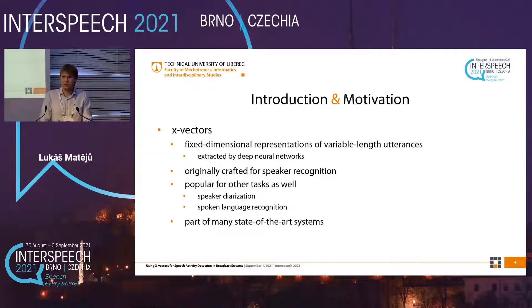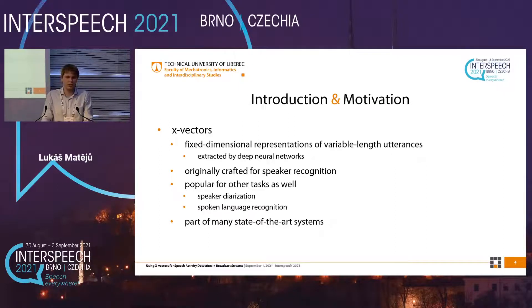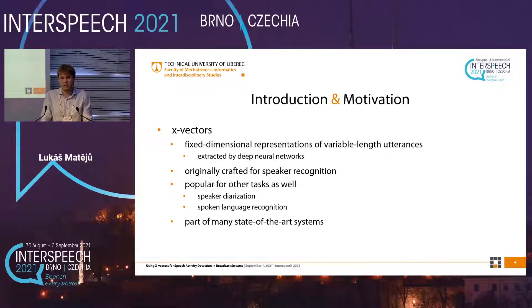For X-Vectors, these are fixed-dimensional representations of variable length utterances. They are usually extracted by deep neural networks. They were originally crafted for speaker recognition, but since then they became popular for many other tasks.